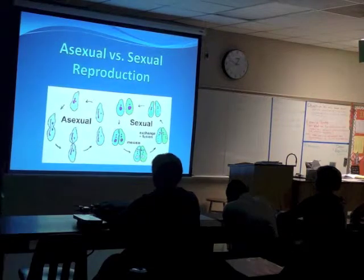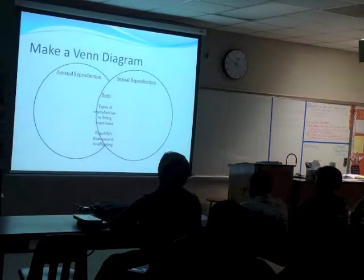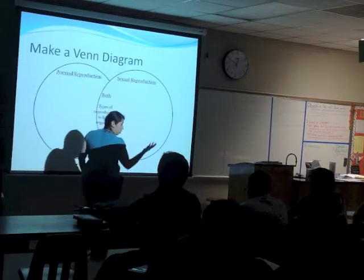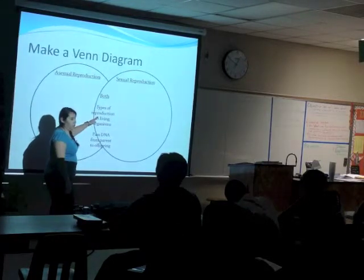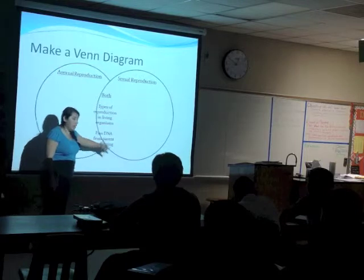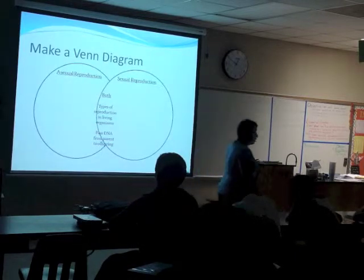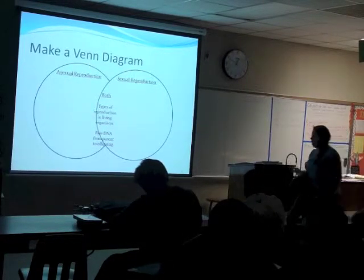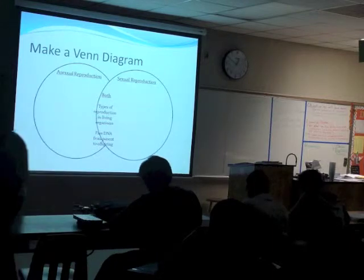We are going to look at the differences between sexual and asexual reproduction and talk about the advantages and disadvantages of sexual reproduction. If we look at how they're the same: in both of them, it's reproduction of living things. All organisms go through one or the other, or some go through both. And in both of them, DNA is passed from parent to offspring.